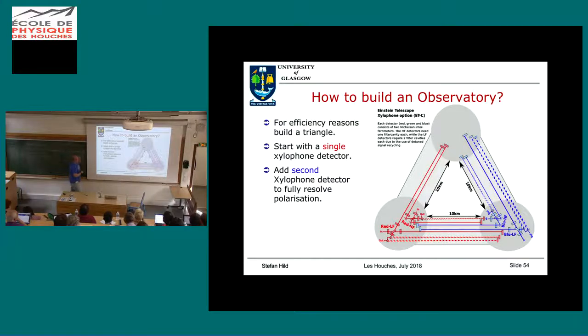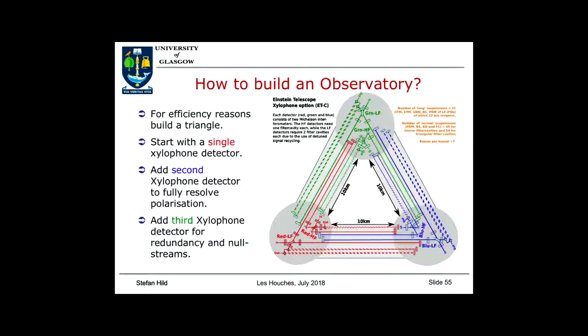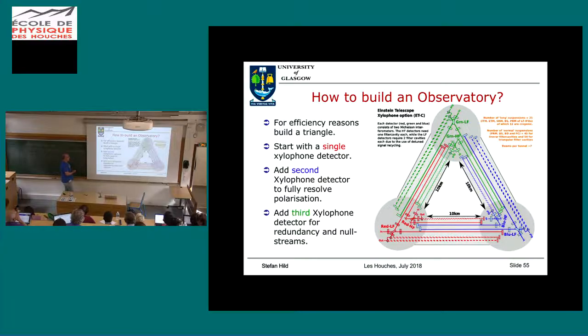Then you plug in a second detector, again consisting of two interferometers—low frequency and high frequency—with additional filter cavities, and you get the possibility to resolve your polarization. Then you put in a third one, the green, and that gives you all the redundancy and null streams. Have null streams been mentioned before?